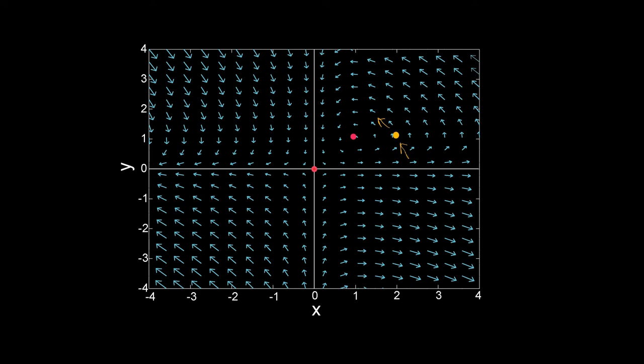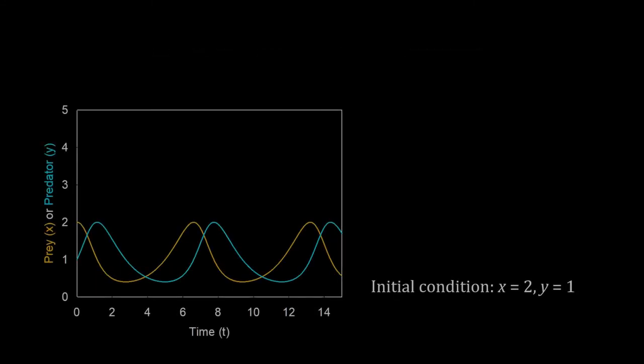Then it will follow the vector at the new position. Starting with that initial position, the system will revolve around the steady state and come back to its original position. So, we will get a closed trajectory around the steady state. A closed trajectory on the phase plane means both x and y have oscillation.